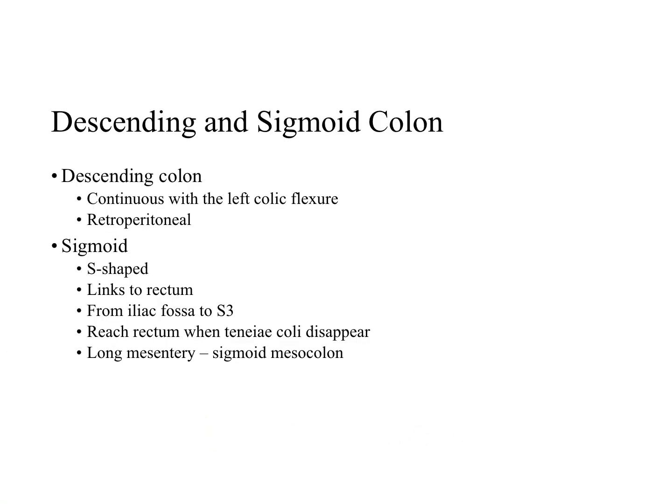The descending colon is retroperitoneal, meaning it's behind the peritoneum, between the left colic flexure and the left iliac fossa, and then it's continuous with the sigmoid colon. The peritoneum covers the colon anteriorly and laterally and binds it to the posterior abdominal wall. As it descends, the colon passes anteriorly to the lateral border of the left kidney.